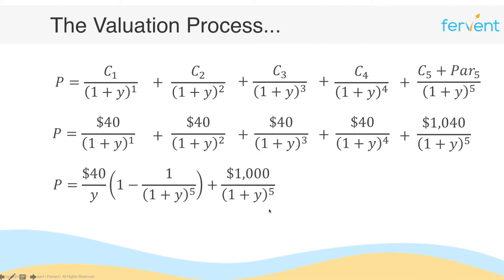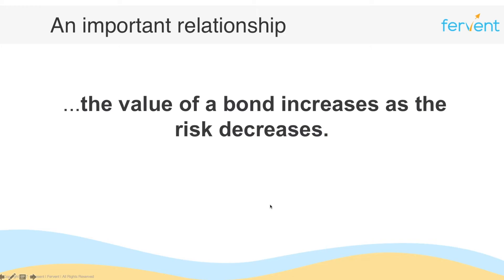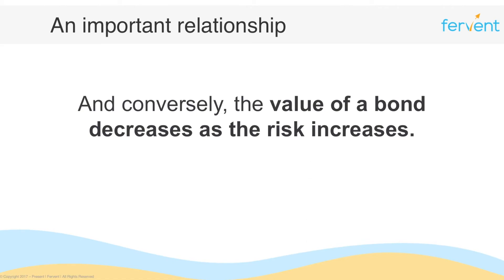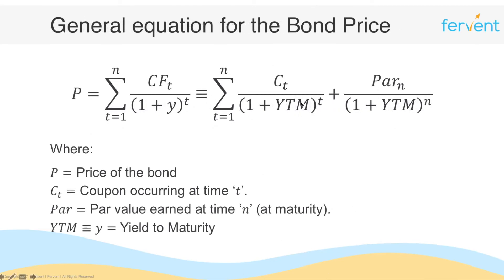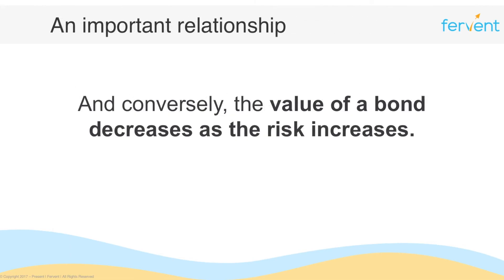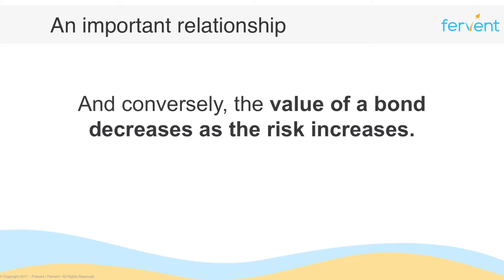If we think about this yield — because the yield is a measure of risk — we can say that the value of a bond increases as risk decreases, and decreases as risk increases. We can see this in the general equation: if the yield increases, the denominator increases and the fraction decreases, so the price of the bond decreases. Similarly, if the yield decreases, the denominator decreases and the price increases. This inverse relationship between yield and price is very important and incredibly powerful — and it applies not just to bonds, but to any financial security or asset.